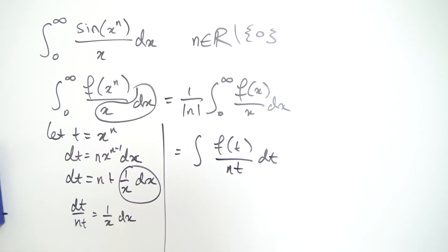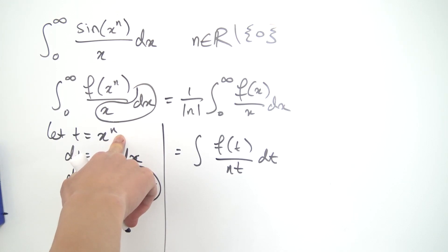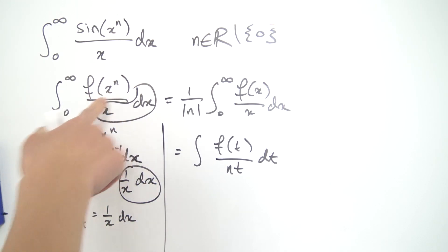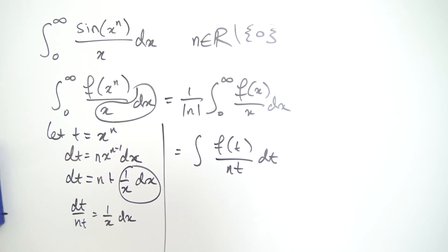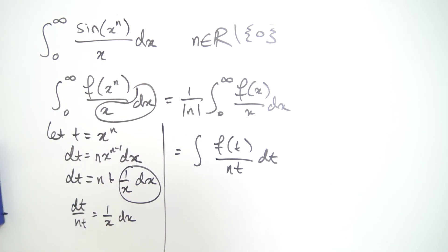Now the bounds are a bit tricky because we have to consider a couple of cases. First, if n is 0 this won't work — that's why we excluded 0. If you plug 0 in, you get x to the 0 which is 1, so inside the function you just have f of 1, a constant, and you're left with the integral from 0 to infinity of 1 over x dx, which diverges. So n must be either positive or negative, and we have to do casework because the bounds change depending on the sign of n.